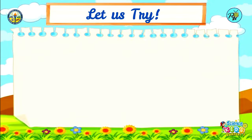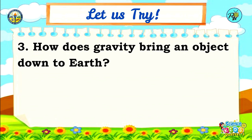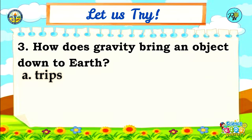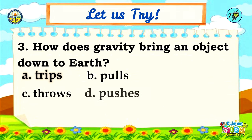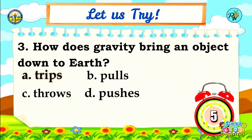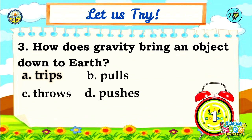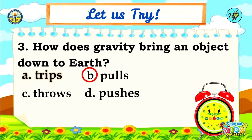Number 3: How does gravity bring an object down to earth? A. Trips, B. Pulls, C. Throws, D. Pushes. Time is up! The answer is letter B — Pulls.